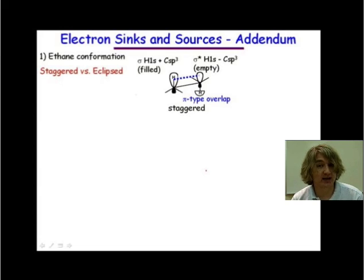And we see we have this pi-type overlap between our filled sigma and our empty sigma star. It's lined up perfectly in a pi-type fashion for this sigma to sigma star donation. This donation helps stabilize this form.